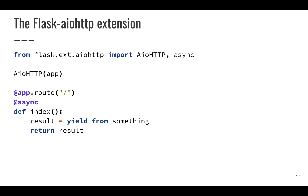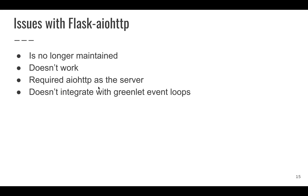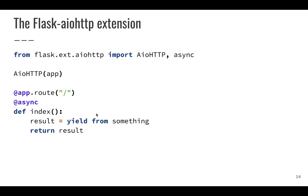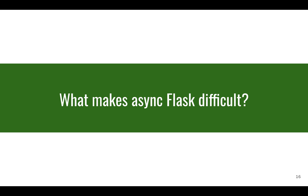Another attempt was the flask-aiohttp extension. Using the pre-Python 3.5 syntax with decorators and yield-from instead of await, it provided the interface where you could await something in a view function simply by wrapping your app in the extension. However, it's no longer maintained, required aiohttp as the server requiring major setup changes, and didn't integrate with greenlet event loops — so it had significant problems.